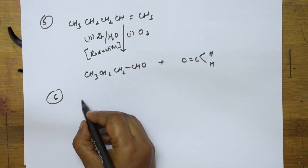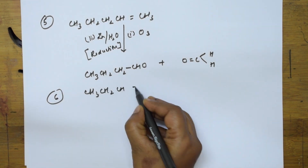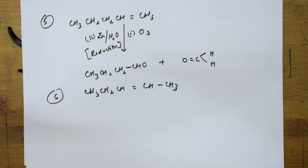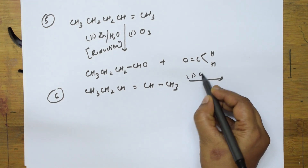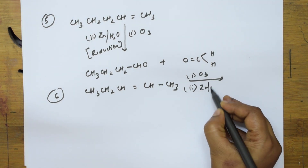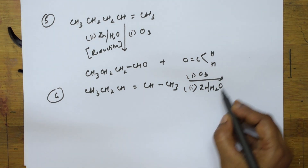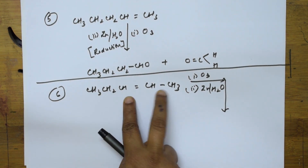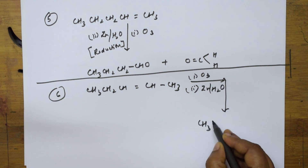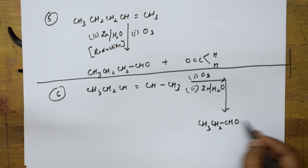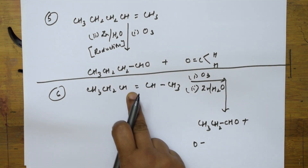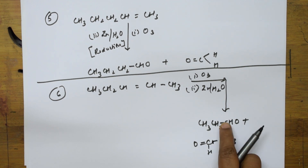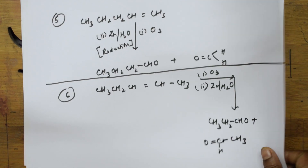Sixth example: this alkene — naming it: 1, 2, 3, 4, 5 — pent, so it is pent-2-ene. When I take this pent-2-ene, first condition ozonolysis, second condition reductive ozonolysis in the presence of zinc and water. I get two products. This particular bond — both sides oxygen adds. I get CH3CH2CHO (propanal) plus CH3CH=O (ethanal). So this is propanal and this is ethanal — two carbons.